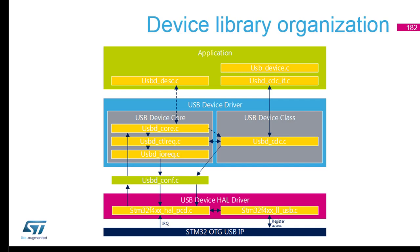Then we have HAL_PCD.c, which uses this low level. It will receive information from the top and also use registers to configure and push changes. Everything is coming from the IRQ. Then we have usbd_conf.c — you'll find it in your source folder, meaning it's something you're going to modify or adapt. It sits between the really low layers and the device drivers.